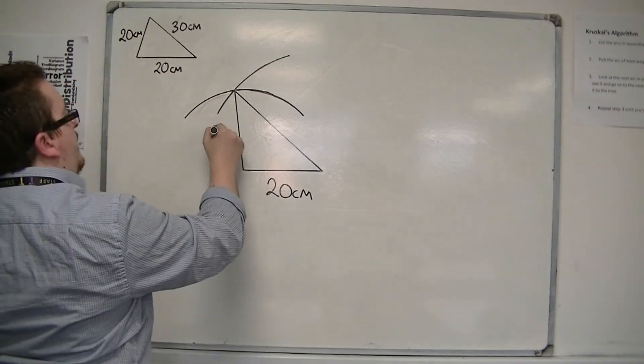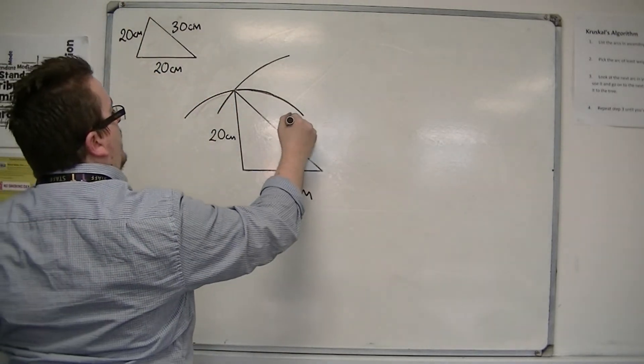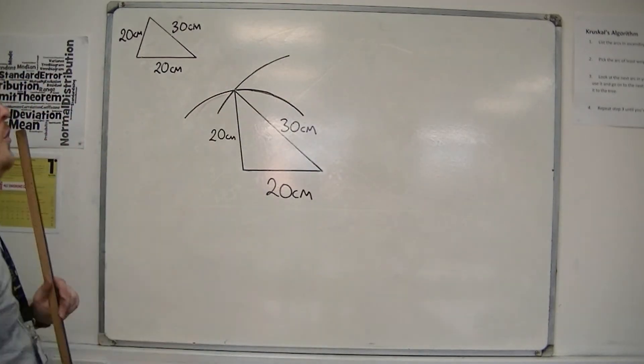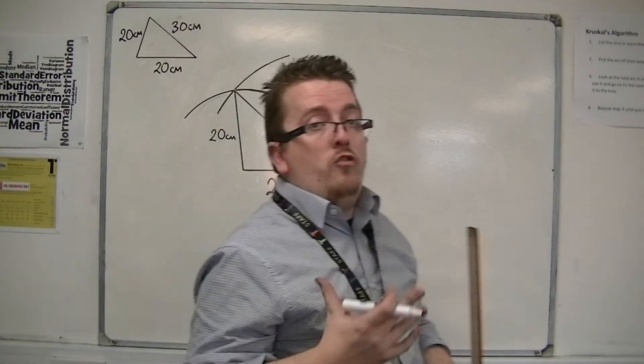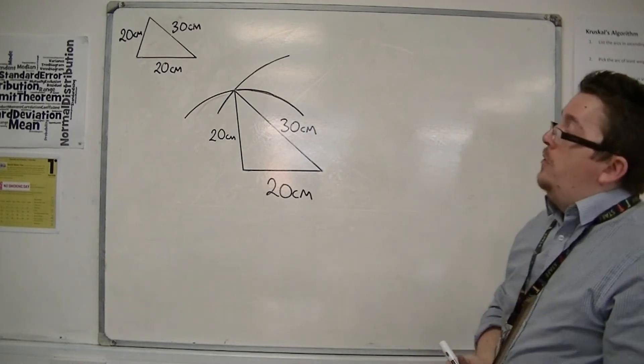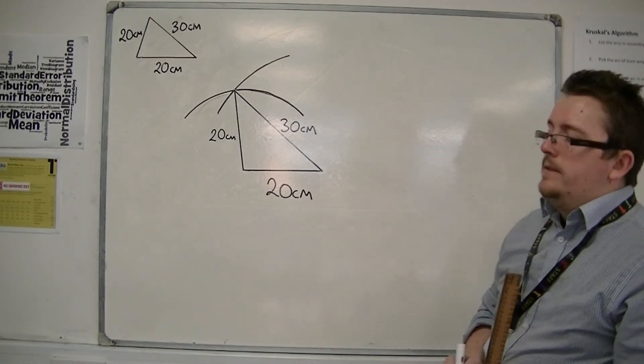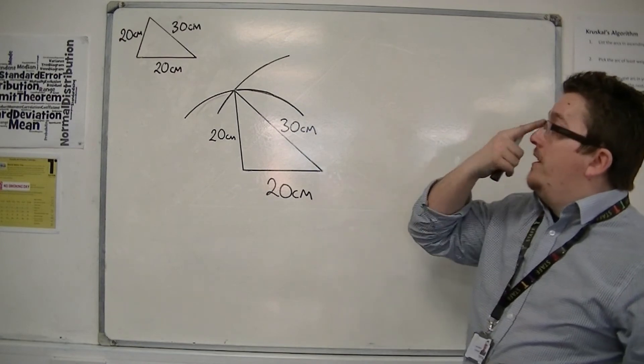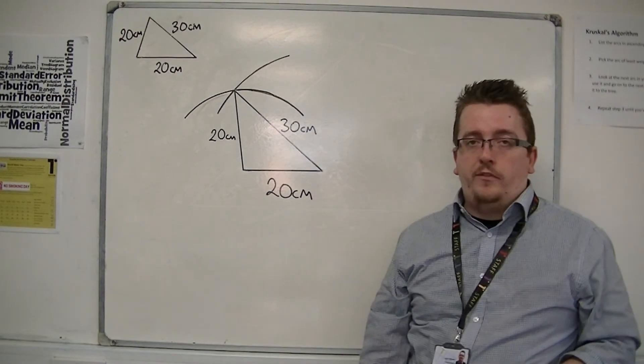So this is 20 centimeters. That's 30 centimeters. And I make sure I keep in my construction lines, because they show my method. And that's how I can draw a triangle, given the length of the three sides.